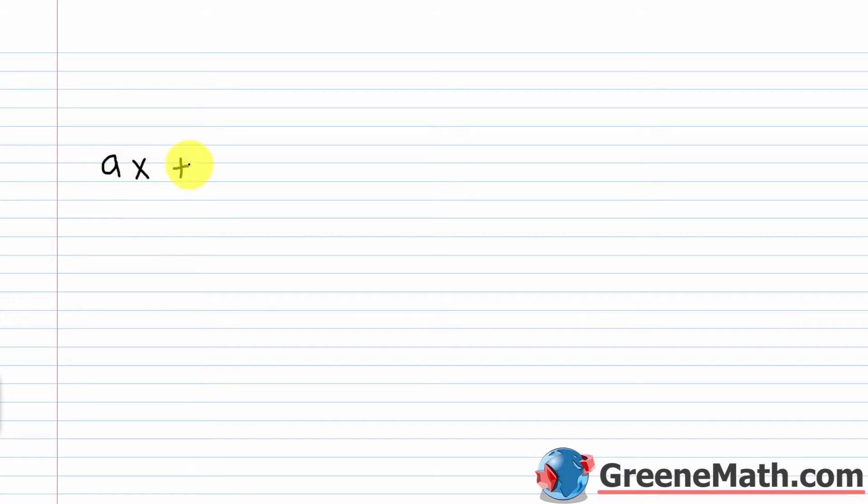In the last lesson, we finally started talking about how to solve an equation, specifically the first type: linear equations in one variable. A linear equation in one variable looks like ax plus b equals c. Your variable doesn't have to be x, but that's the most commonly used in algebra, so we show that when we show a generic formula.